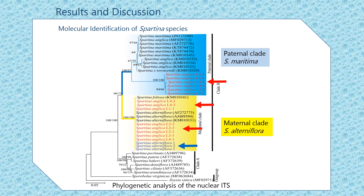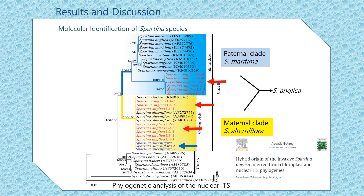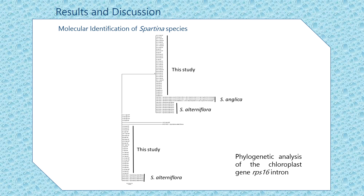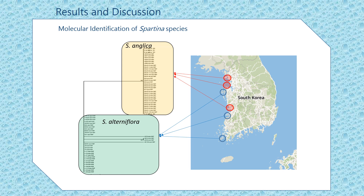While in some samples we only found one group of sequences that clustered in only one clade. We assigned the two clades as paternal and maternal clades. Therefore, S. angelica, as an allopolyploid species, is expected to have two divergent sequences from both parents. Accordingly, all samples with two sequences were assigned as Spartina angelica, while samples with only one sequence were assigned as Spartina alterniflora. This study was the first to reveal the hybrid origin of Spartina angelica in a phylogenetic context. Additionally, chloroplast analysis also revealed two clades that correspond with our identification using nuclear ITS. Finally, we successfully identified our samples as either Spartina angelica or Spartina alterniflora, and interestingly, they were segregated based on geographical locations.